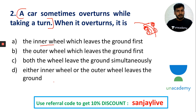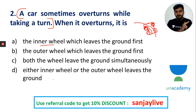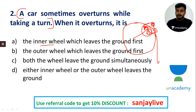Simple answer: when the car takes a left turn, centrifugal force acts outward. The inner wheel — the wheel on the left side — leaves the ground first. If turning left, the inner wheel on the left leaves the ground first. Next question.